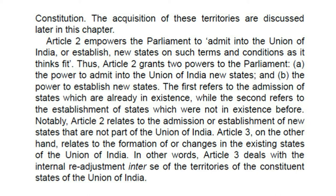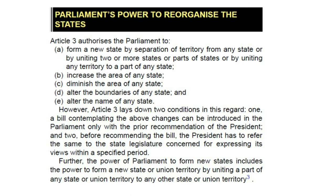Article 3, on the other hand, relates to the formation of or changes in the existing states of the Union of India — the internal readjustment inter se of the territories of the constituent states. Article 3 authorizes Parliament to: form a new state by separation of territory from any state or by uniting two or more states or parts of states; increase the area of any state; diminish the area of any state; alter the boundaries of any state; and alter the name of any state.